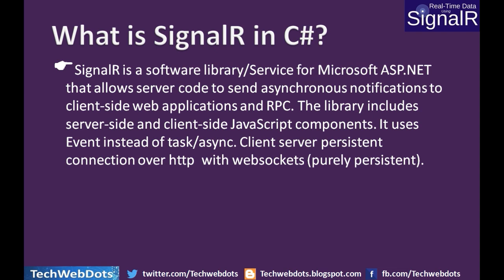What is SignalR? SignalR is a software library from Microsoft — it is part of Microsoft ASP.NET services — that allows server code to send asynchronous notifications, meaning it works side by side behind the scene with no pause, to a client-side web application and via RPC (Remote Procedure Call). The library includes server-side and client-side JavaScript components and it uses events instead of tasks or async — we are not using threading tasks or async/await keywords. It is a totally different model.